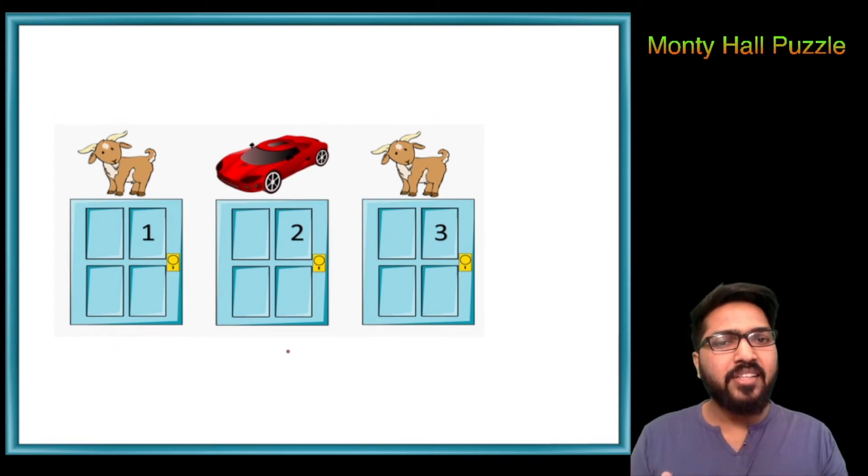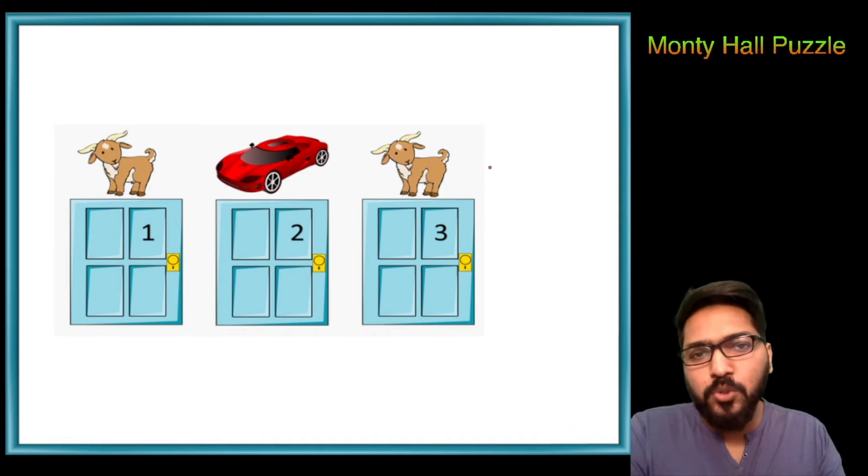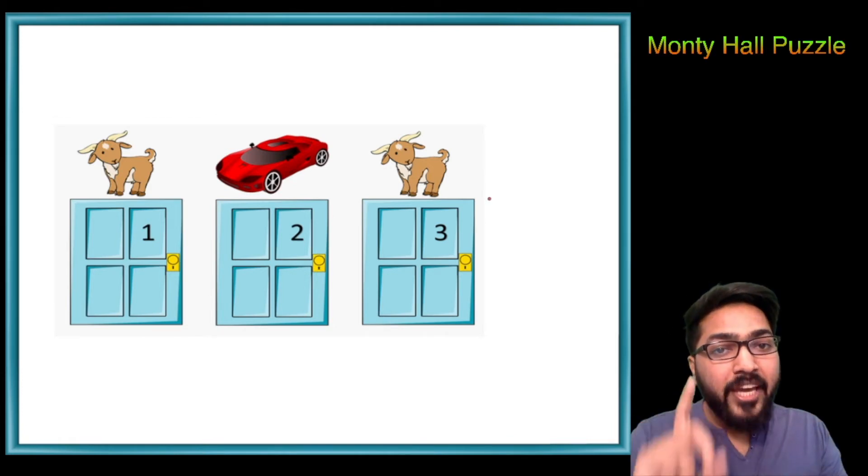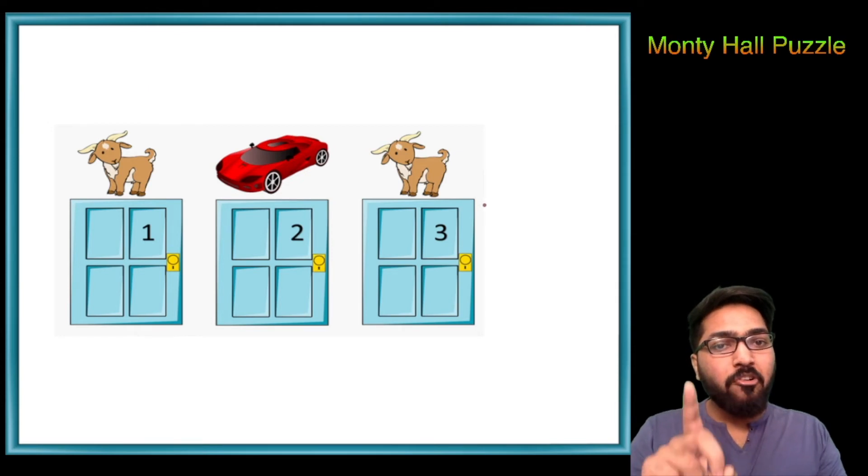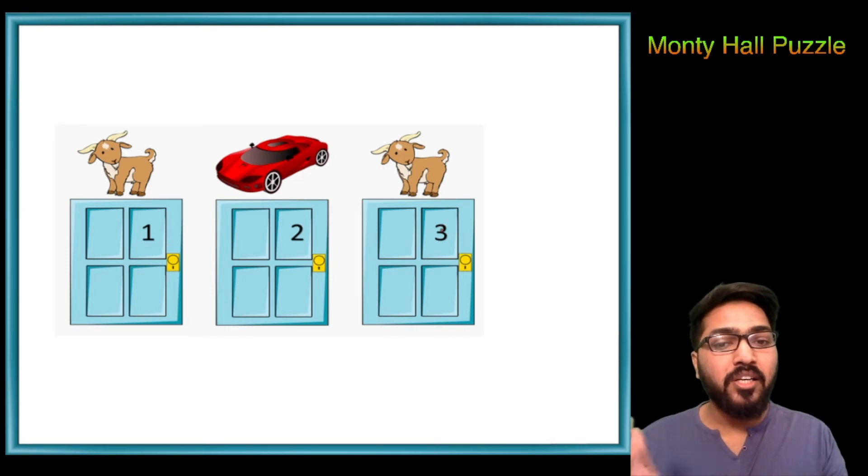Pause the video over here and think about the best choice for the contestant. At first thought, we think that there is no difference. Now try to understand that the game show host actually knows where the car is, so he is obviously opening the one which has the goat behind it. It means that the car will always be skipped and the goat will always be opened. So there might be a possibility that the door is going to skip the car. Let's work through this.